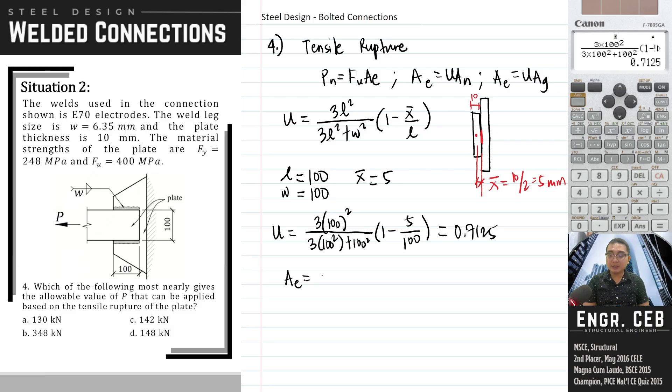So we can now compute A sub e, that is u times the gross area which is 100 times 10 for the effective area is 712.5 millimeters squared. So with that, we can now compute the nominal strength.